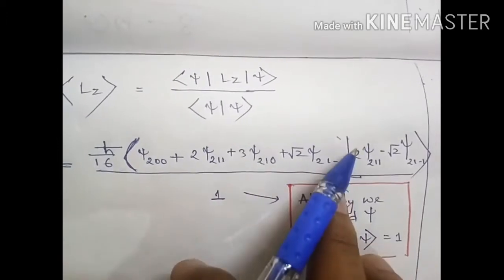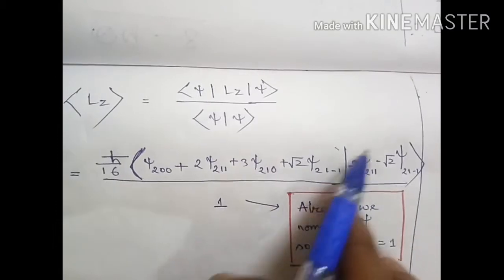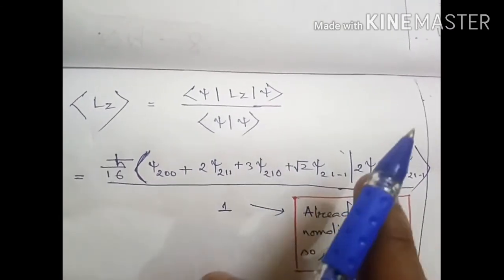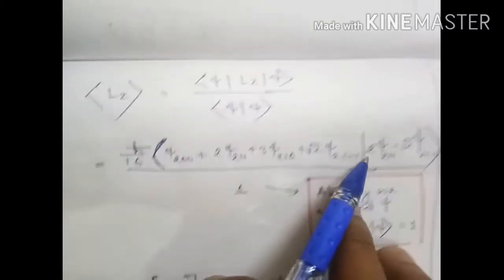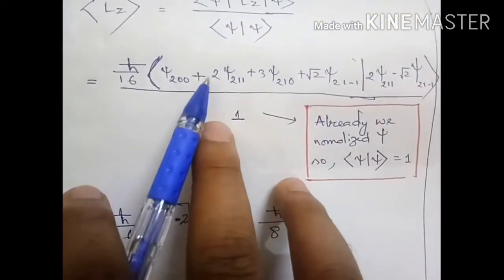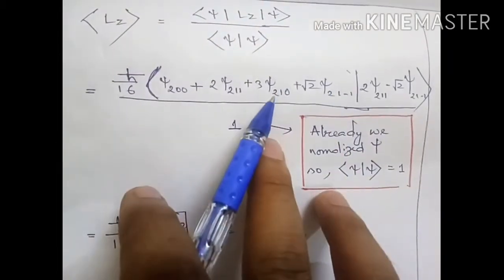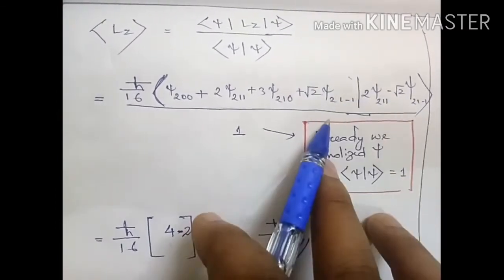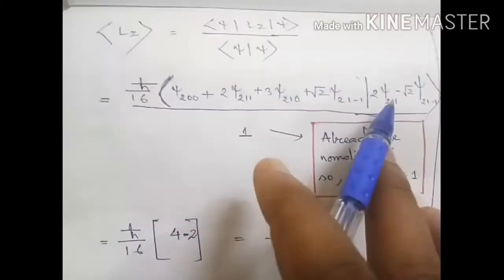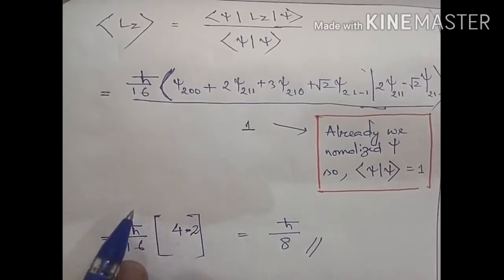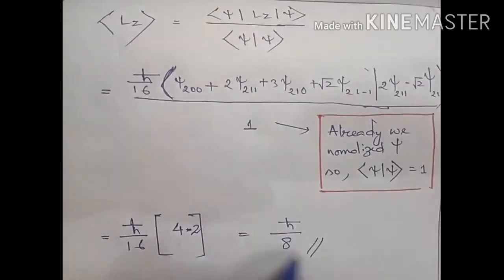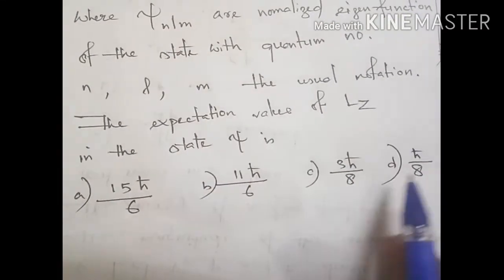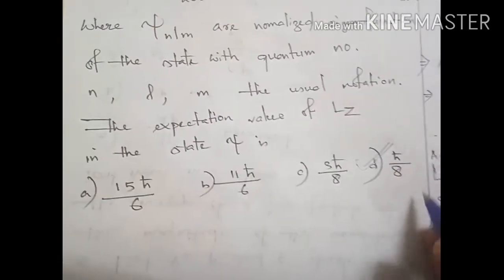Now we multiply term by term. psi_200 has no matching term, so it gives zero. psi_211 paired with psi_211 gives 1, and the coefficient 2 times 2 gives 4. psi_210 has no matching term, giving zero. psi_21-1 paired with psi_21-1 gives 1, with coefficient root2 times root2 = 2, but with a minus sign giving -2. So we have hbar/16 times (4 - 2) = hbar/16 times 2 = hbar/8. The correct answer is hbar/8, which is option D.